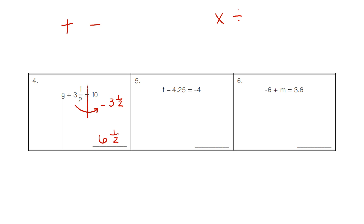For number 5, t minus 4.25 equals negative 4. The negative 4.25 is on the left and the negative 4 is on the right. We take our arrow and move it away from the variable towards the other number. Instead of minus 4.25, we do the opposite — we do plus 4.25. On the calculator, negative 4 plus 4.25 gives a value of 0.25.